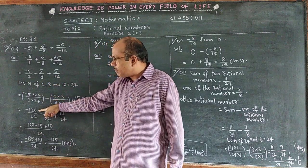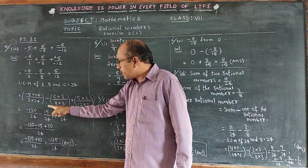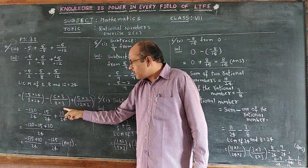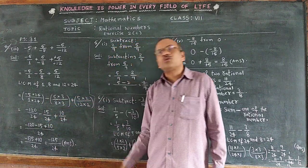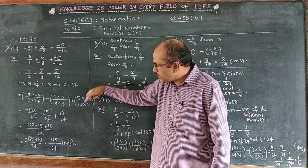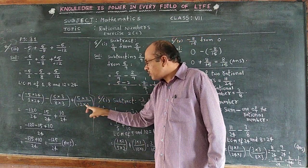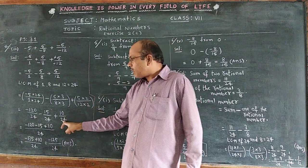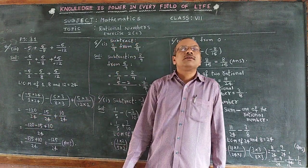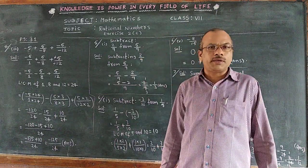So we get minus 120 by 24, minus 15 by 24, and plus 10 by 24. The next step: 5 times 2 is 10 by 12 times 2 equals 24. Now all the rational numbers have the same denominator, 24.